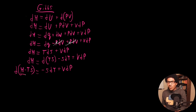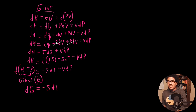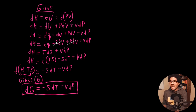Rearranging, d(H - TS) = -SdT + VDP. This quantity, H minus TS, is the Gibbs free energy, denoted G. So DG = -SdT + VDP, and the general definition is G = H - TS, defined using only properties of the system.